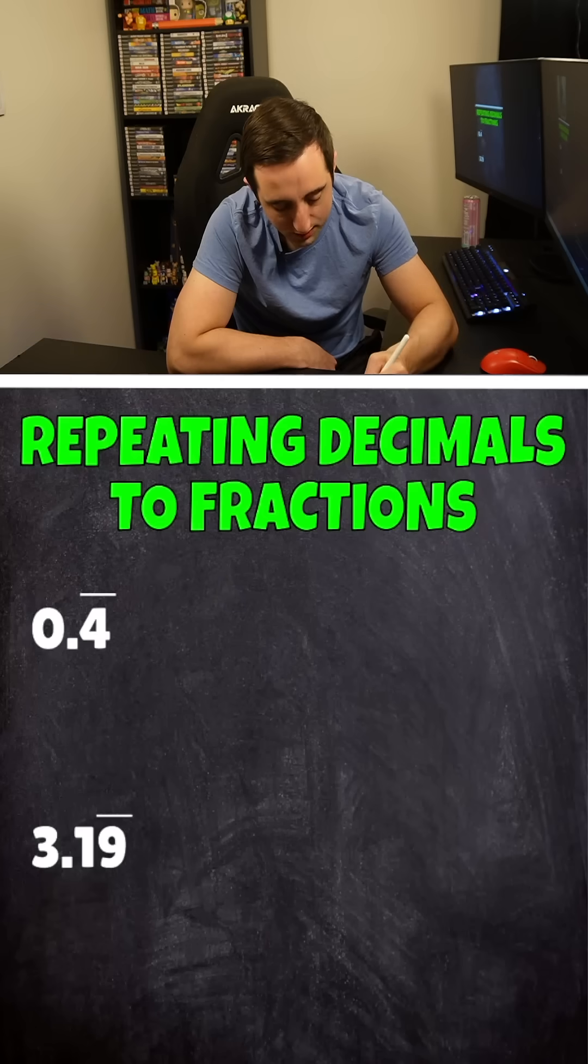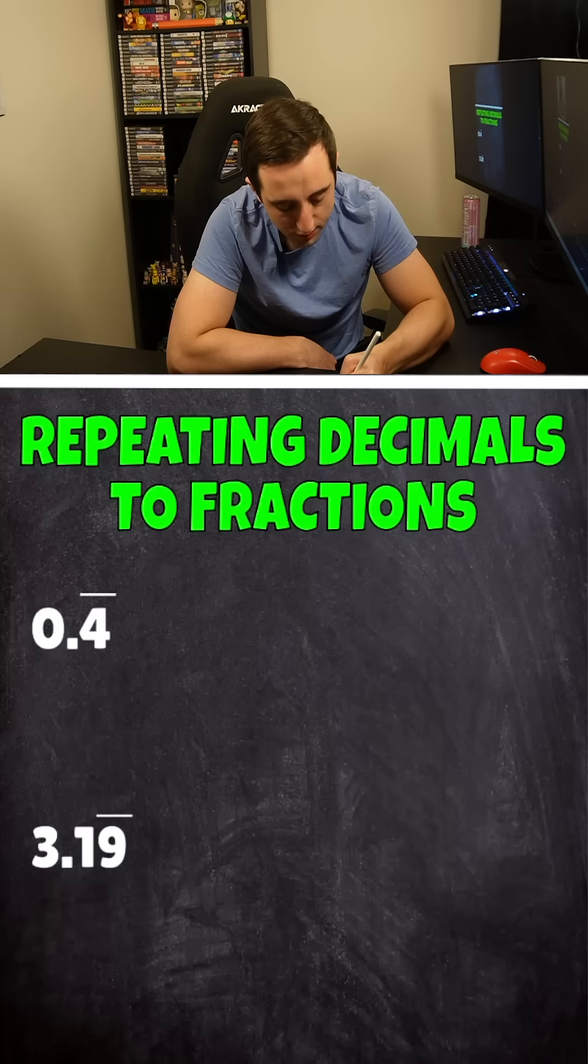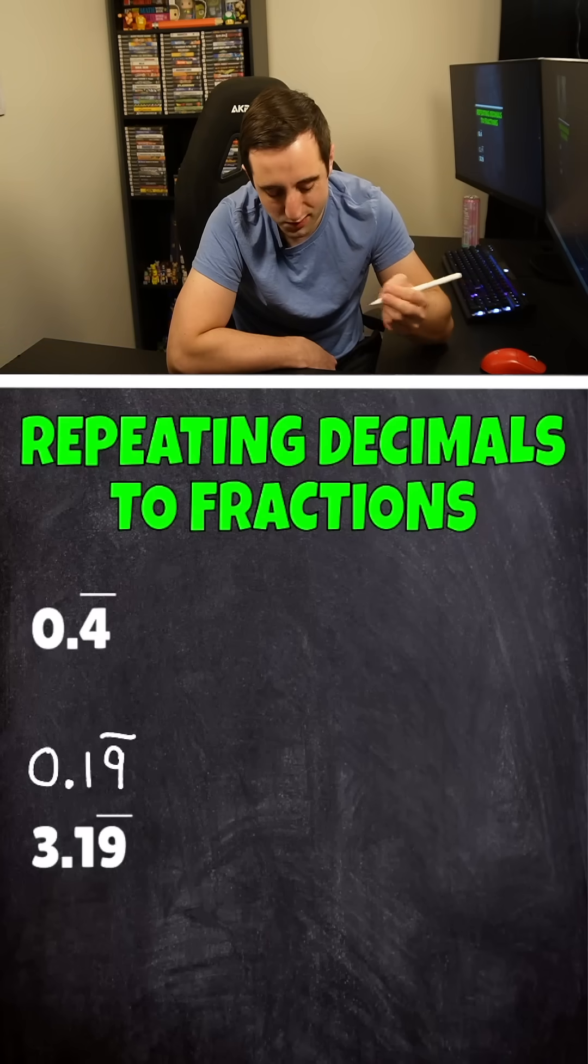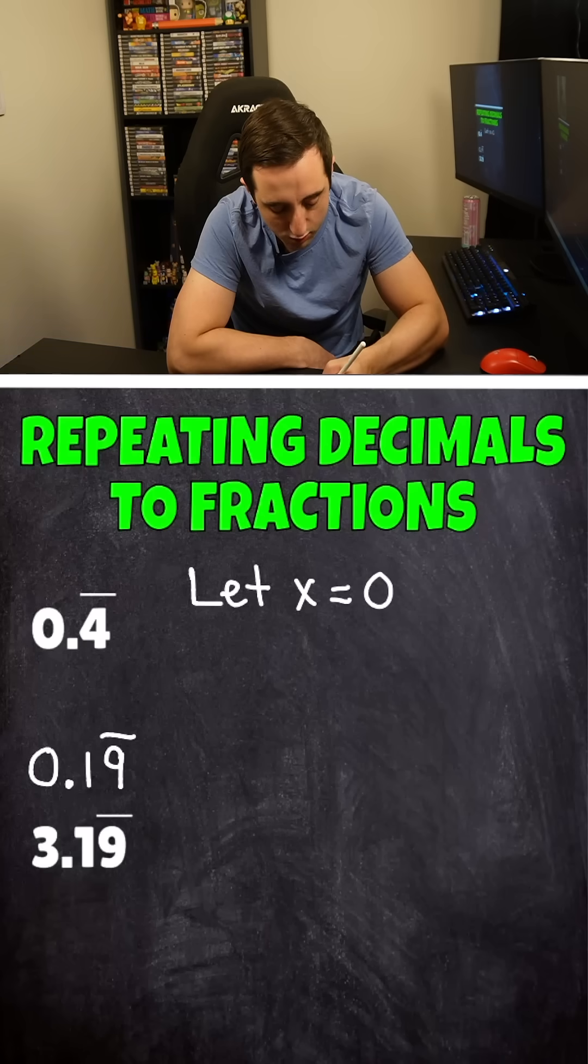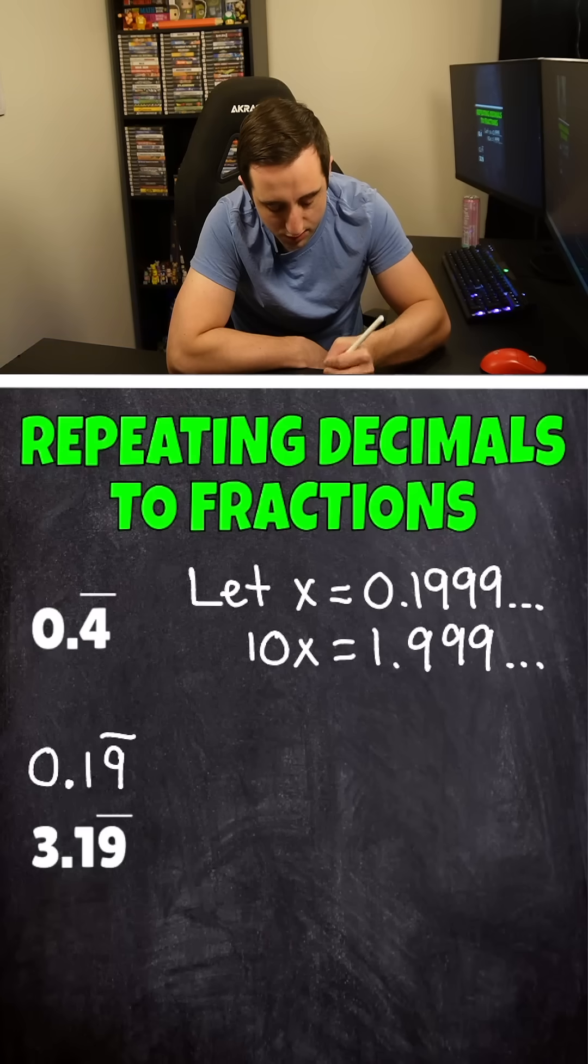Now let's go ahead and take a look at a little bit of a tougher one here. We end up getting 3.19 with the 9 repeating. All we're going to do is ignore the 3 that's in front of the decimal point for right now, and we're going to tack it on at the very end. It just makes things a little bit easier. And we're going to do the same exact steps now. Let x equal our repeating decimal, so 0.1 with the 9 repeating. We're going to multiply both sides by 10 because we have one digit that's repeating again, and we're going to move that decimal point one place value to the right.